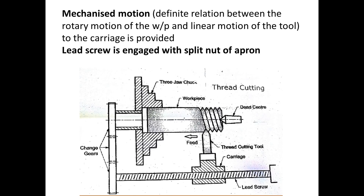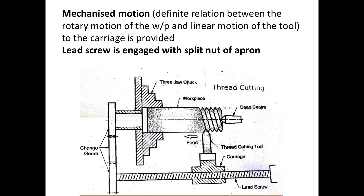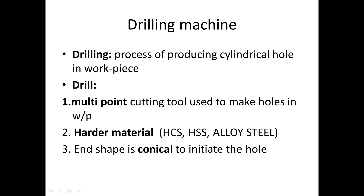This diagram explains a thread cutting operation on the lathe machine. The lead screw is engaged with the help of a split nut. The mechanized motion, that is a definite relative motion, is given by using the carriage and the lead screw. The thread is cut on this cylindrical workpiece on the lathe. This is the split nut assembly which actually engages the carriage to the lead screw. That was the last lecture content; now we will start with the drilling machine.